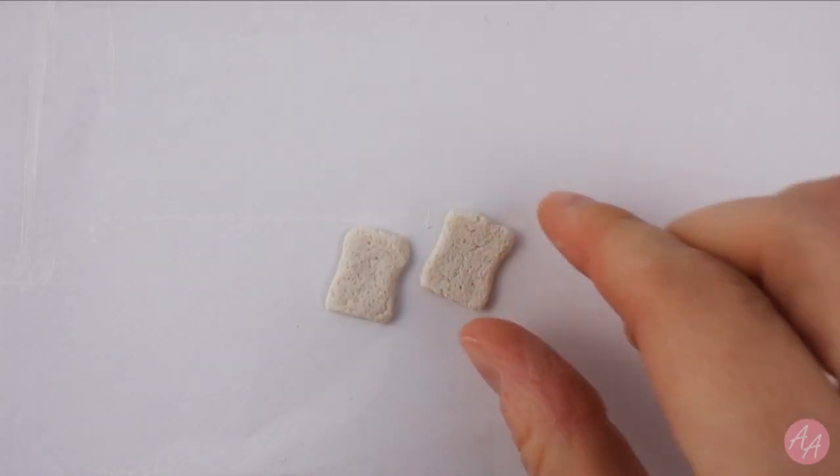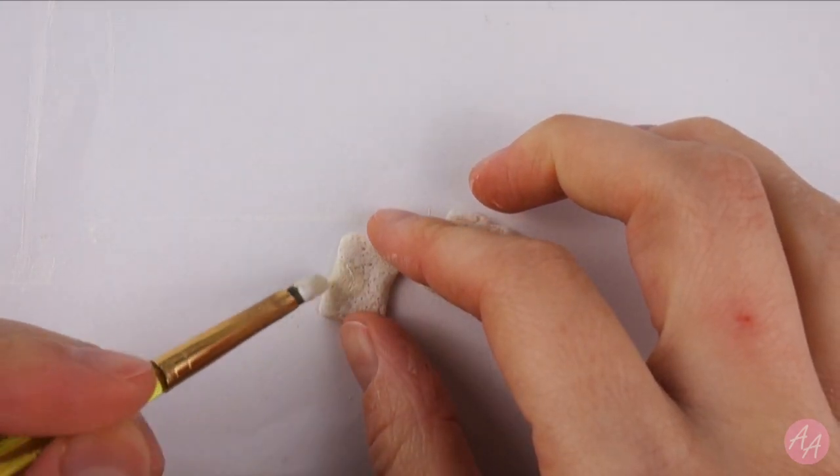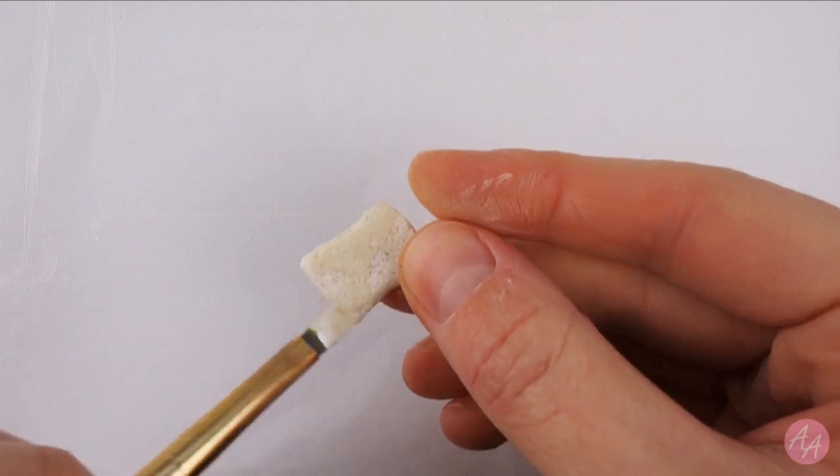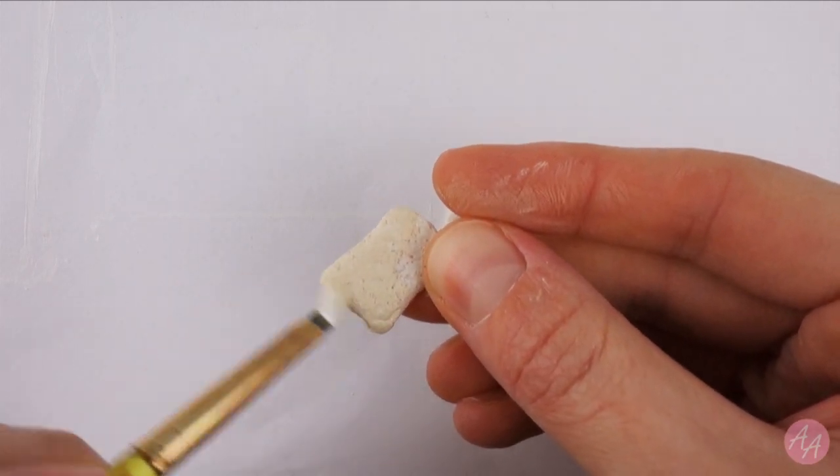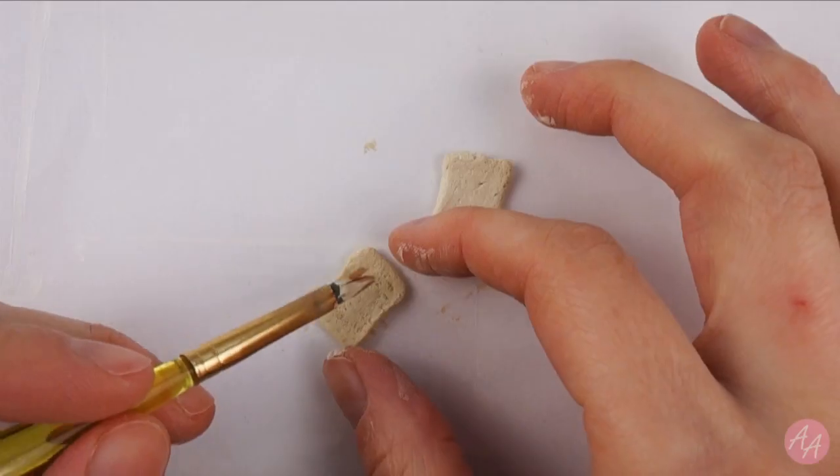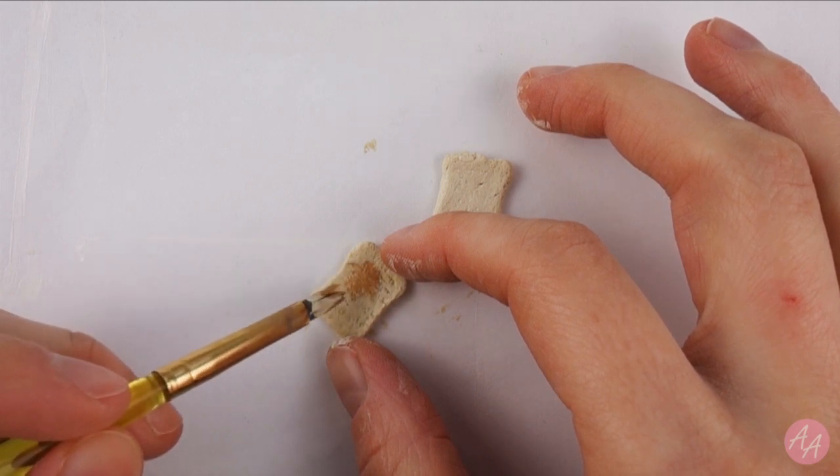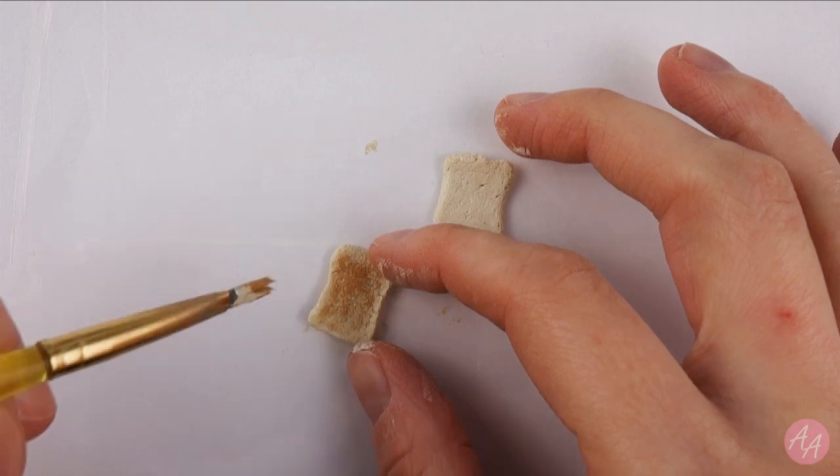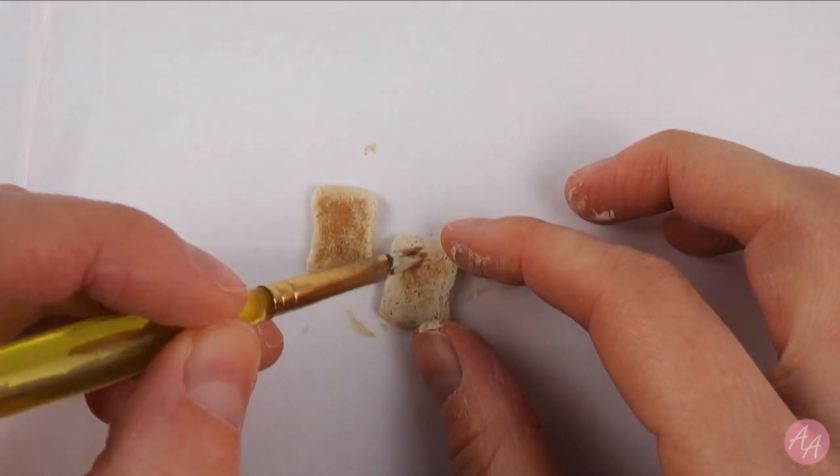After baking my two slices of salt dough bread to dry them out, I'm going to paint them. First, with a base layer of pale beige and then adding some toasty detail with an orangey brown. I'm lightly brushing this on so the pale color still shows through. The texture of the salt dough really helps this happen and makes it look more realistic.